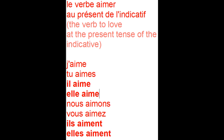That will make 'elles aiment,' 'ils aiment.' You cannot say 'il aime' without the liaison if it's plural — like nous aimons, vous aimez, ils aiment, elles aiment. The S and the vowel link together to form almost like the same word, but everybody knows these are two words. It's like singing words together.